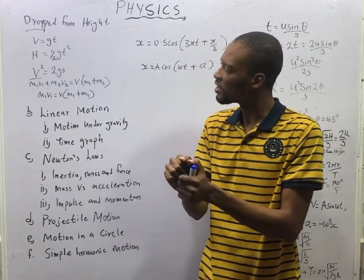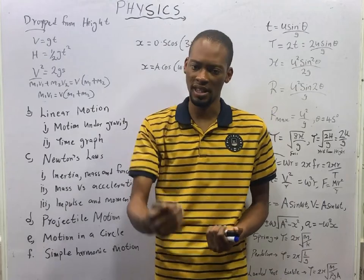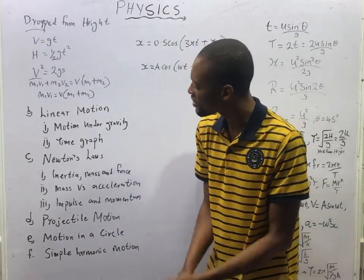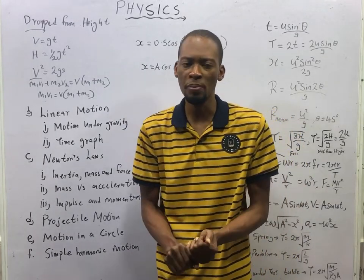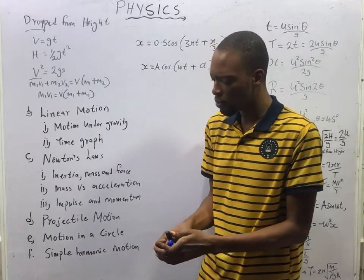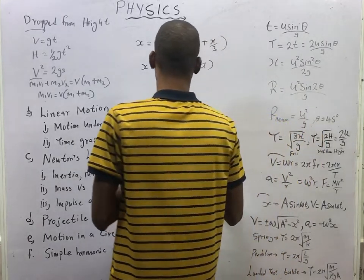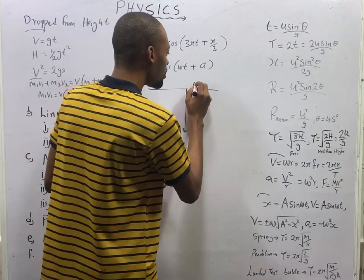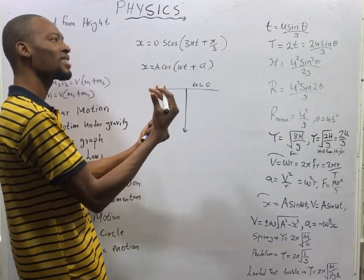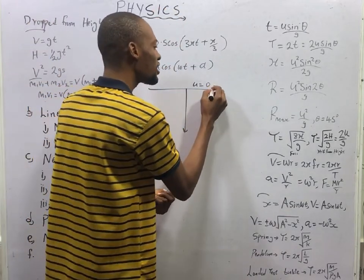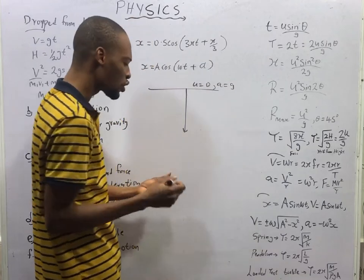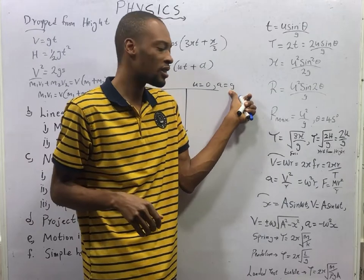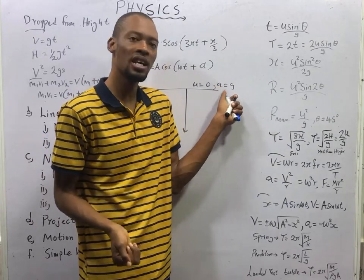The force of gravity is the force that brings all objects down. How do you know that you are dealing with motion under gravity? If you are told that a body is dropped from height. When you drop a body from height, the initial velocity is equal to zero. And since we are dealing with height, A becomes G — because when it comes to height or vertical distance, we deal with acceleration due to gravity, not linear acceleration.